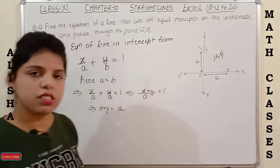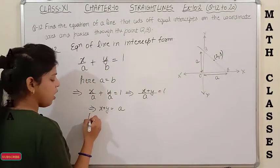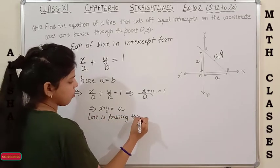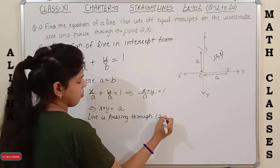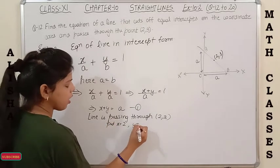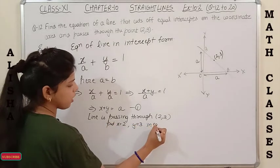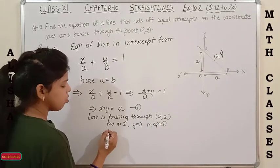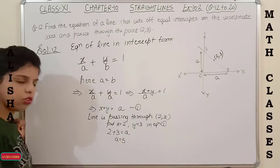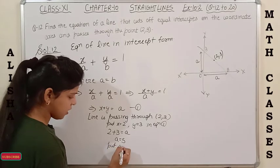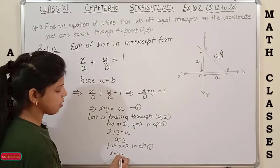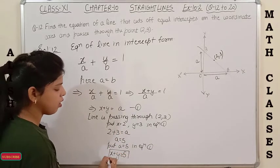The line passes through (2, 3), so put x = 2 and y = 3 in equation 1: 2 + 3 = a, so a = 5. Substituting back, the equation of the line is x + y = 5. This is our answer.